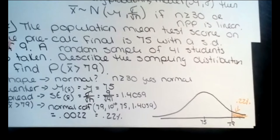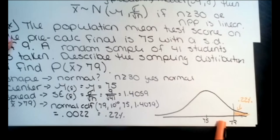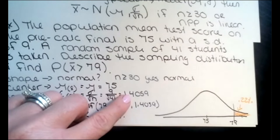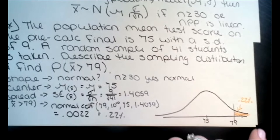Think back to the empirical rule — we said two standard deviations away means it's unusual, it could be an outlier. 79 is pretty far out there when the spread is 1.4. So 0.22% makes sense — it's a very small probability.